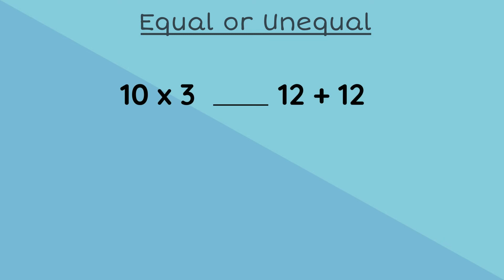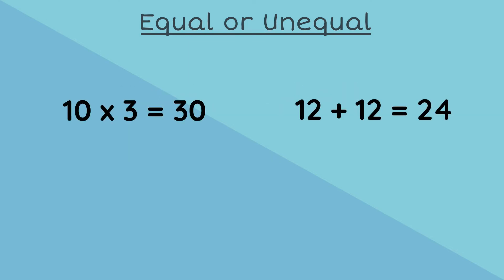On the left hand side, we have 10 multiplied by 3. And on the right hand side, we have 12 added to 12. Are these two equations equal or unequal? Well, 10 multiplied by 3 is 30, and 12 added to 12 is 24. Therefore, on the left hand side, we have 30. Is that equal or unequal to 24? It is unequal.